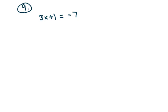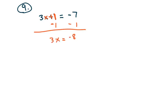Now we're getting into two-step equations. In previous problems we were doing just one step to get the answer; here we have two. The most common way is to always move the number that's not attached to the variable first. So for 3x plus 1 equals negative 7, subtract 1 first to get 3x equals negative 8, then divide through by 3 to get x equals negative 8 over 3.